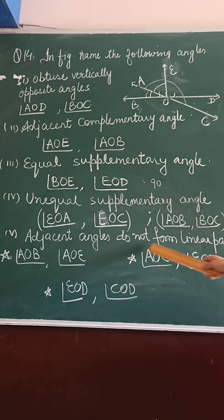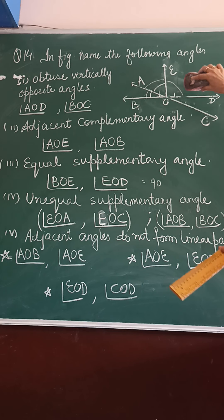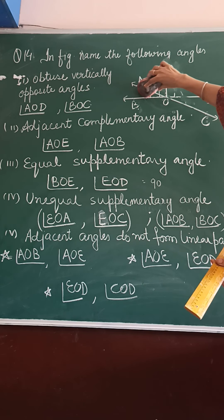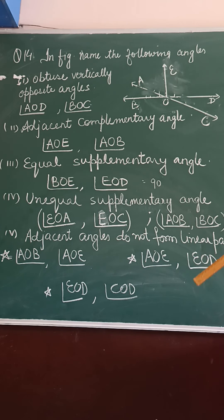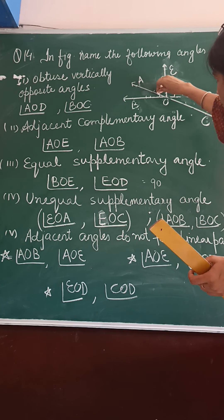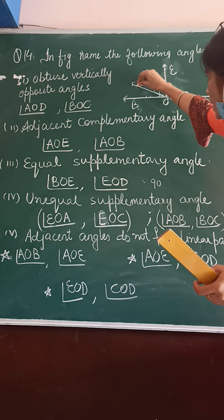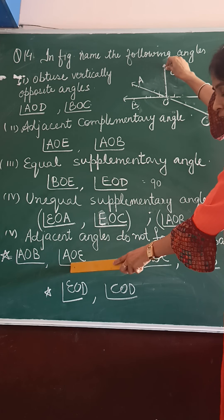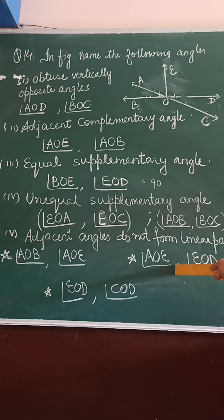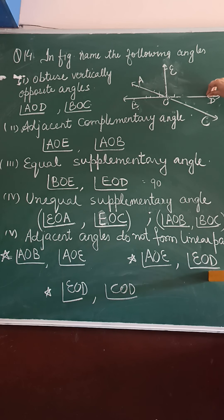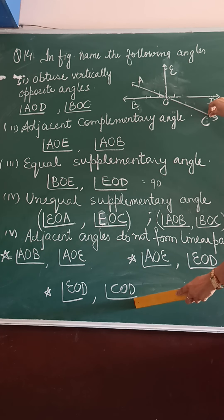Fifth part: adjacent angles that do not form a linear pair. Adjacent angles have a common vertex, a common arm, and the non-common arms are on either side of the common arm. First pair: A, O, B and A, O, E — they are adjacent angles. Second pair: A, O, E and E, O, D — they are adjacent angles. Third pair: E, O, D and D, O, C — they are adjacent angles but not supplementary.